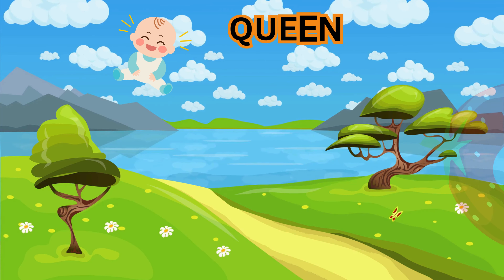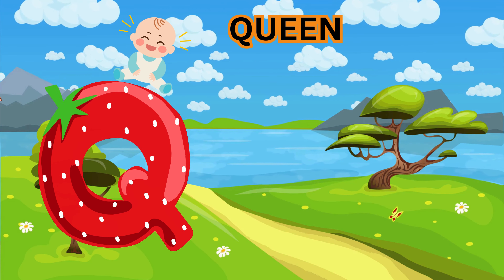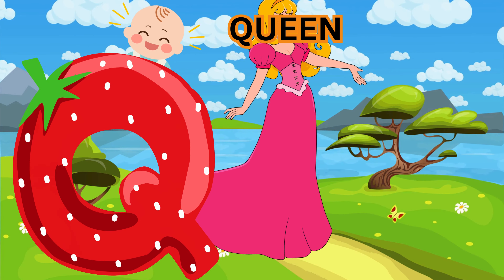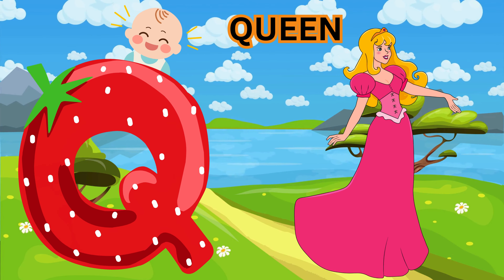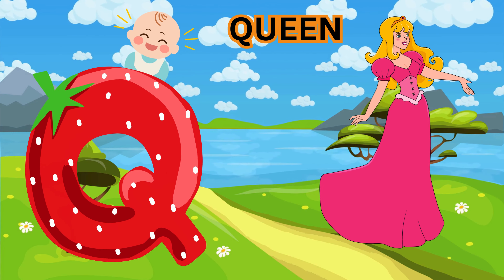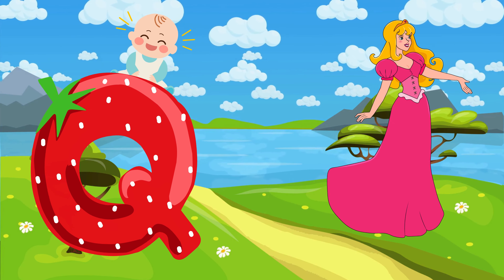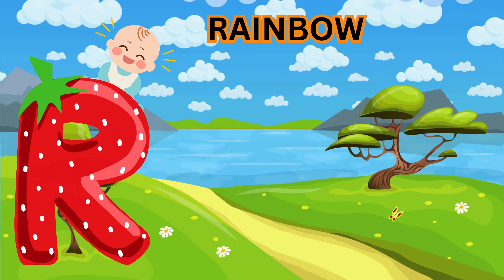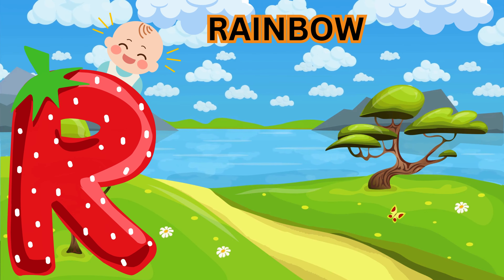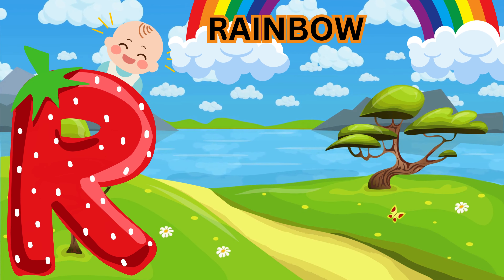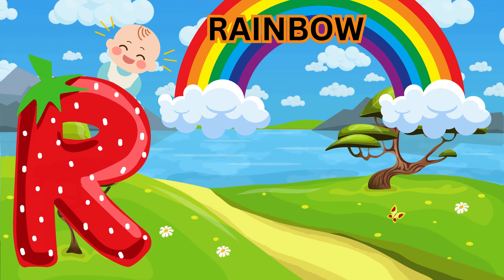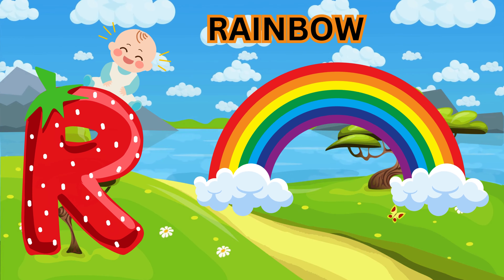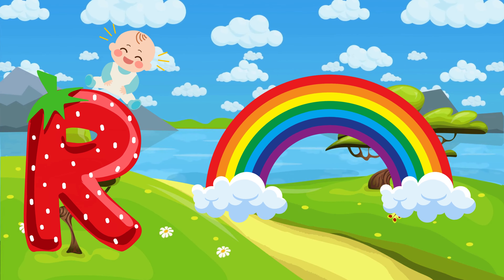Q is for Queen, K-K-Queen, K-K-Queen, Q-Queen. R is for Rainbow, R-R-Rainbow, R-R-Rainbow, R-Rainbow.